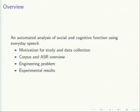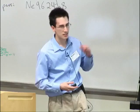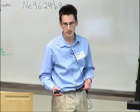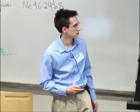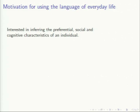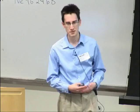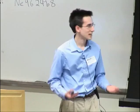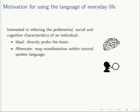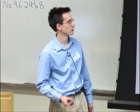At the biggest possible scope, we're interested in inferring the preferential, social, and cognitive characteristics of an individual. The best way to do that would be to directly probe someone's brain, but in many applications that's not practical — you've got MRIs, but that's not always realistic. Speech is a pretty direct model of what people think and their cognitive capacity. You can directly ask people their opinions and health, or you can observe them in their natural environment.